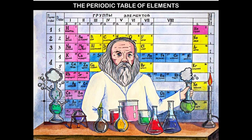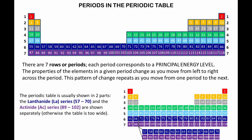In this chapter, we will discuss how the elements are organized in the periodic table. In the periodic table shown at the top, the elements are arranged by increasing atomic number. There are seven rows or periods. Each period corresponds to a principal energy level. The properties of the elements in a given period change as you move from left to right across the period. This pattern of change repeats as you move from one period to the next.